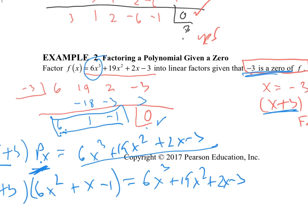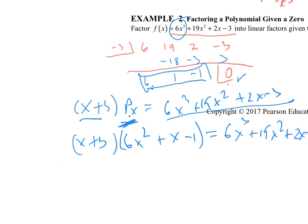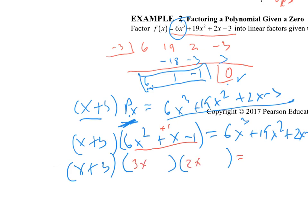So x plus 3 times some other polynomial equals the original 6x³ + 19x² + 2x − 3. Taking the remainder, since this was a third-degree polynomial, the leftovers are second-degree: x plus 3 times (6x² + x − 1) is the original polynomial. Now I need to factor 6x² + x − 1. I bet most of you can factor that quadratic in your head.